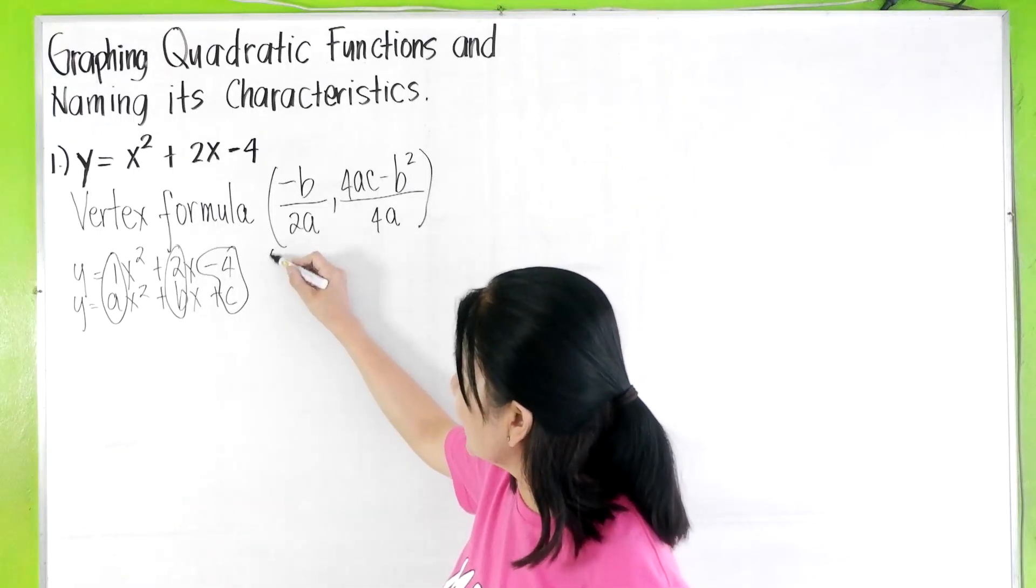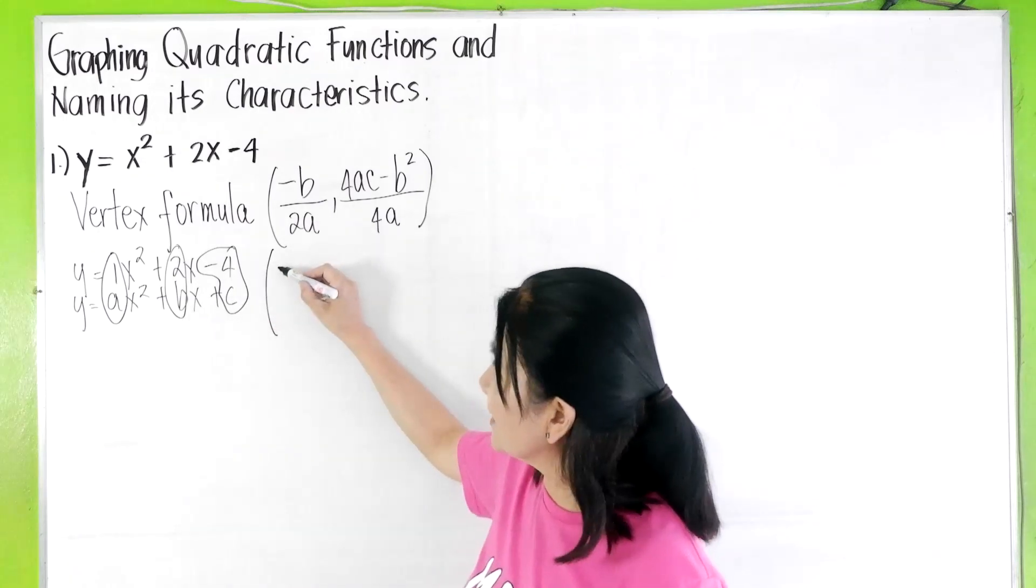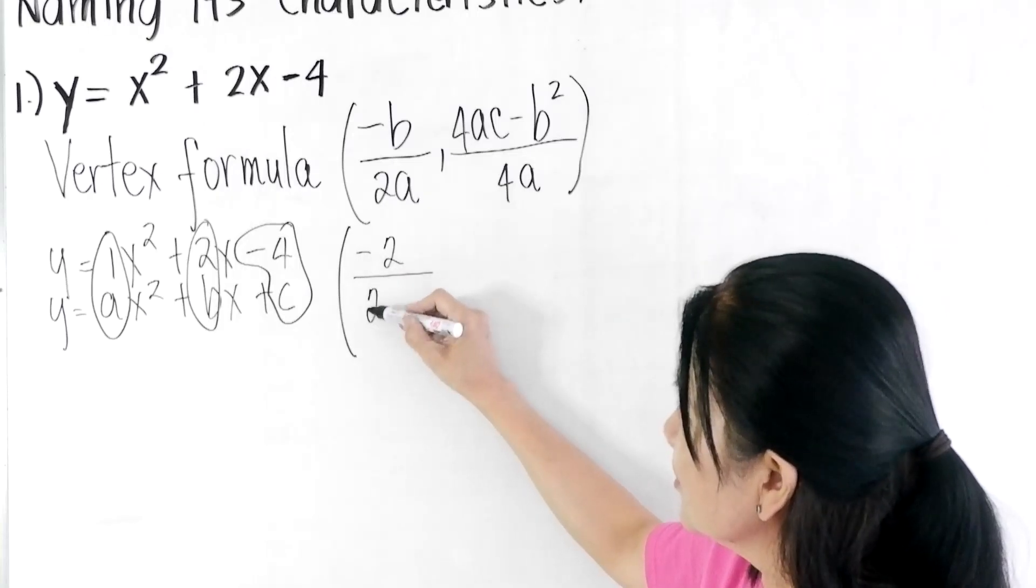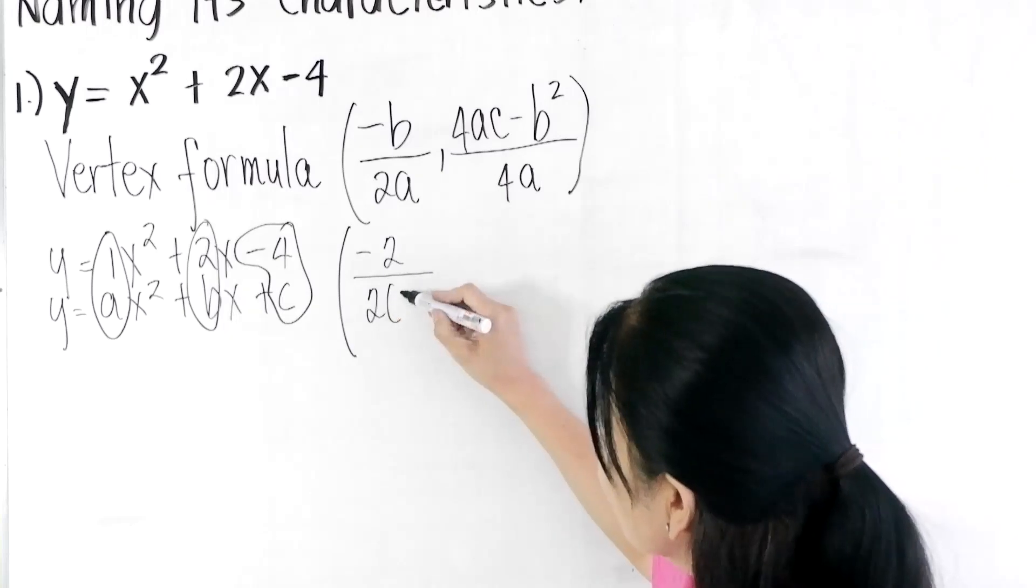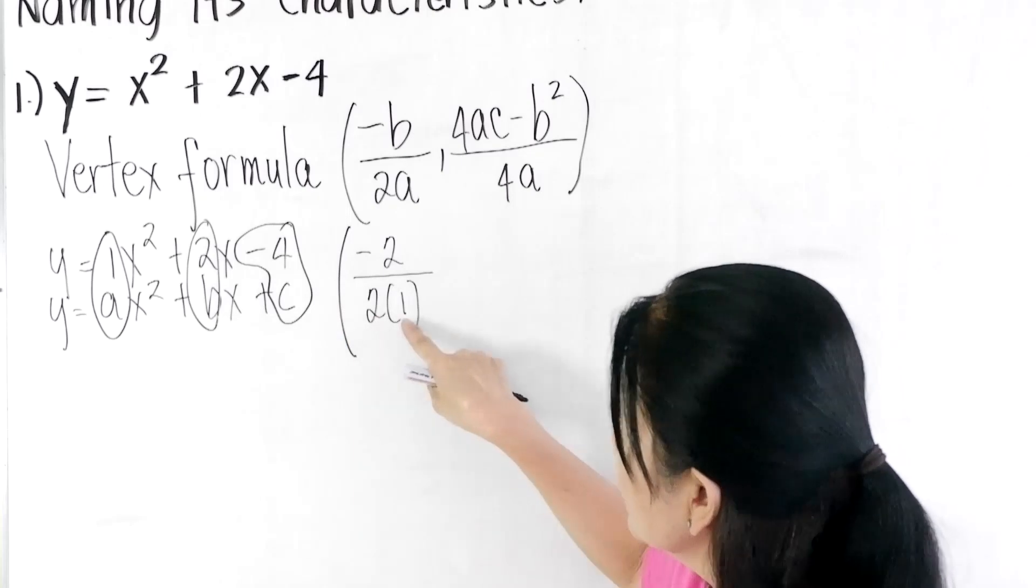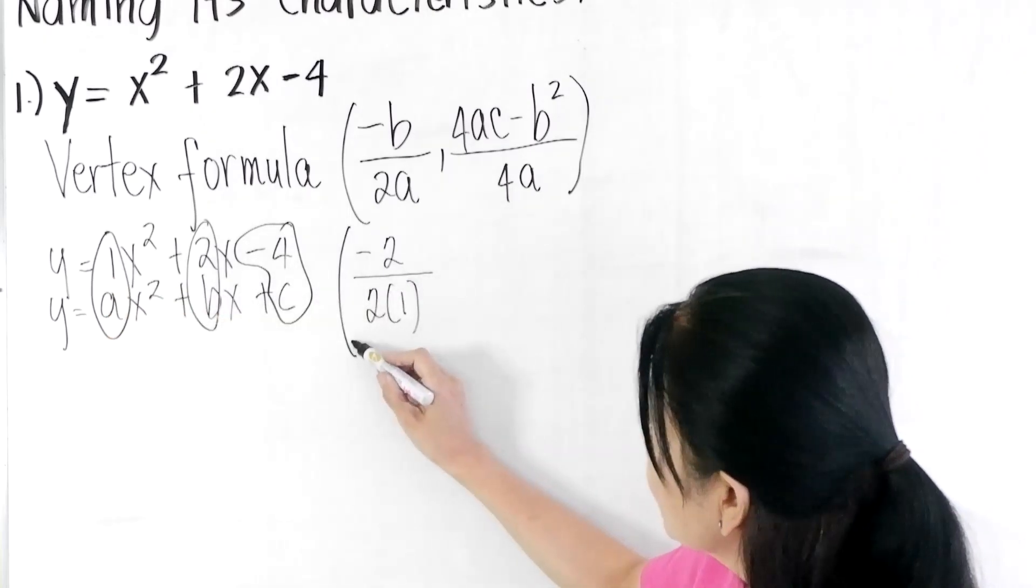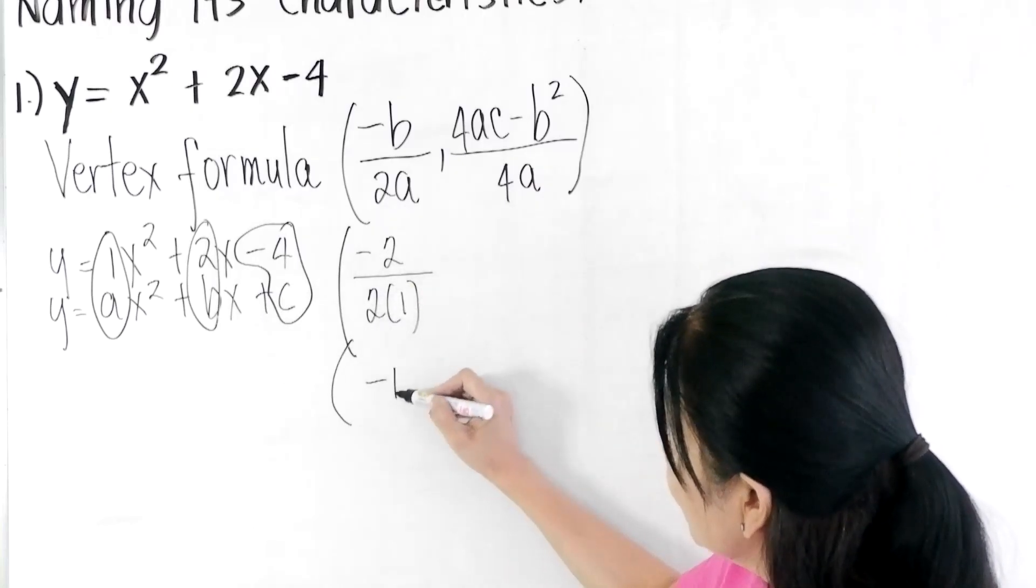We just have to plug in the values here in the vertex formula to find the vertex. So we have here -2 over 2a, 1. Our a is 1. Again, -b/2a, 2 times 1. So that gives us -2/2 is -1.